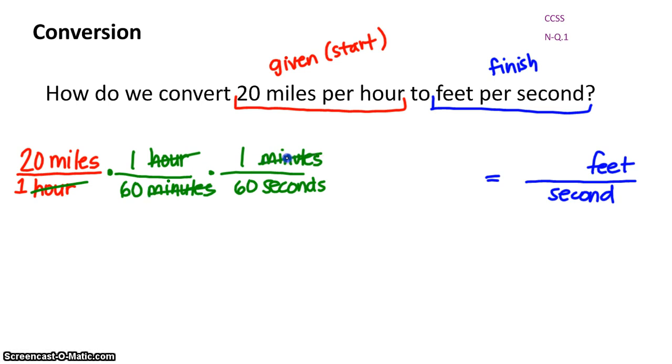And now the minutes cancel out. They cross cancel out. So now on top, the only word that exists is miles, which is still a problem. And on the bottom, the only word that exists is seconds, which is what we want to get to. So that's good. Check. We've got our seconds.